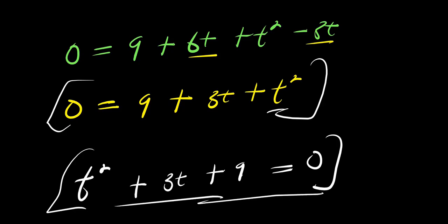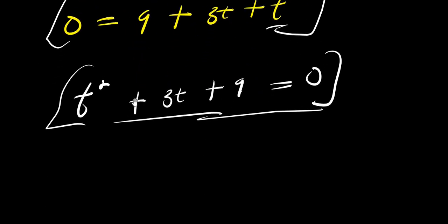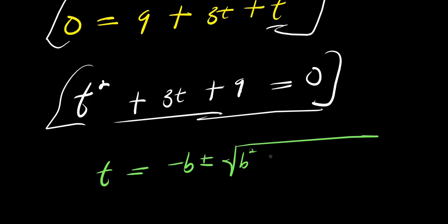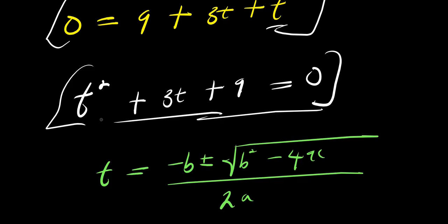Rearranging: t squared plus three t plus nine equals zero. This is a quadratic equation we will solve using the quadratic formula. Here a is one (coefficient of t squared), b is three (coefficient of t), and c is nine.